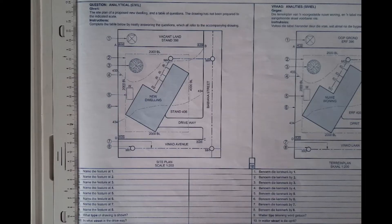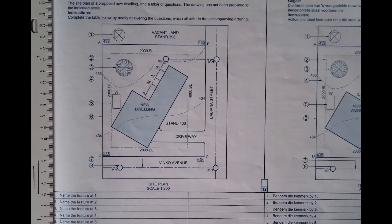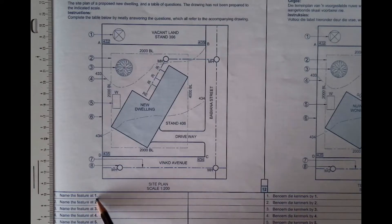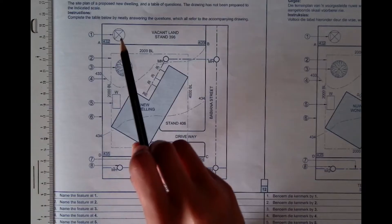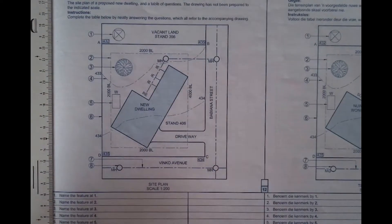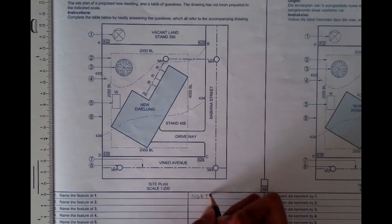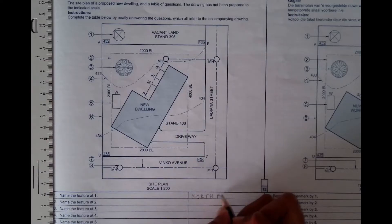Let me just zoom in a little, just so we can get a view of our site plan while I answer the questions. And then we can start. First things first, you are told to name the feature at one. The feature at one is called the North Point. So you're going to come here and print North Point.